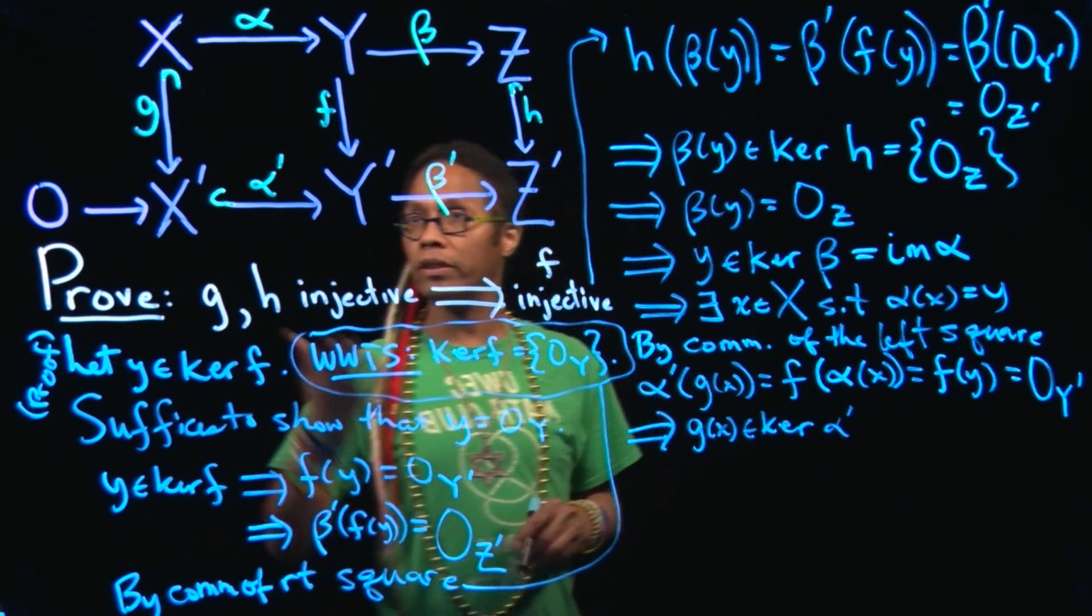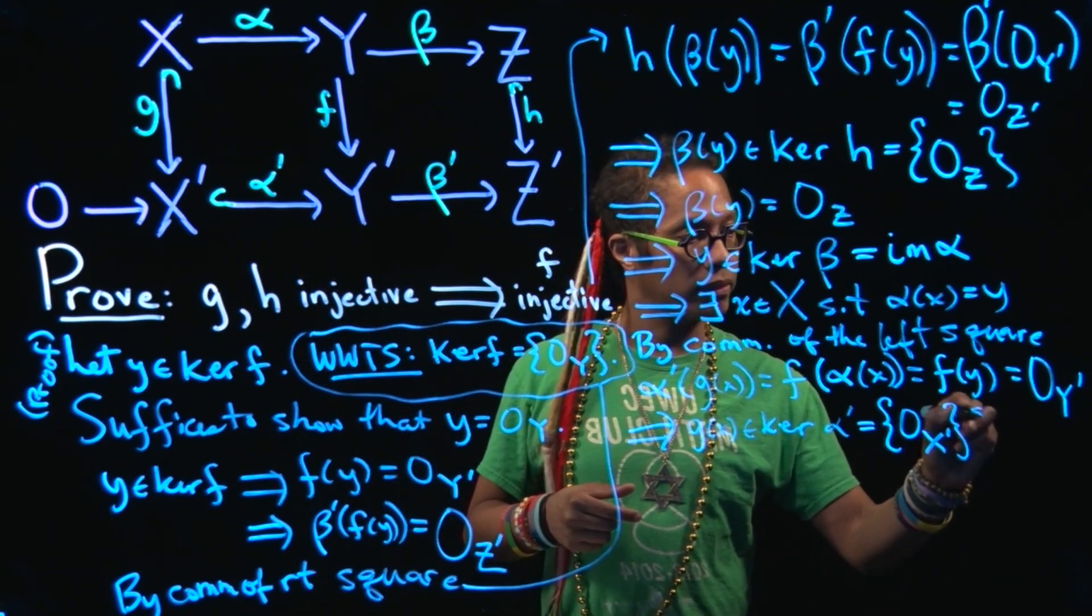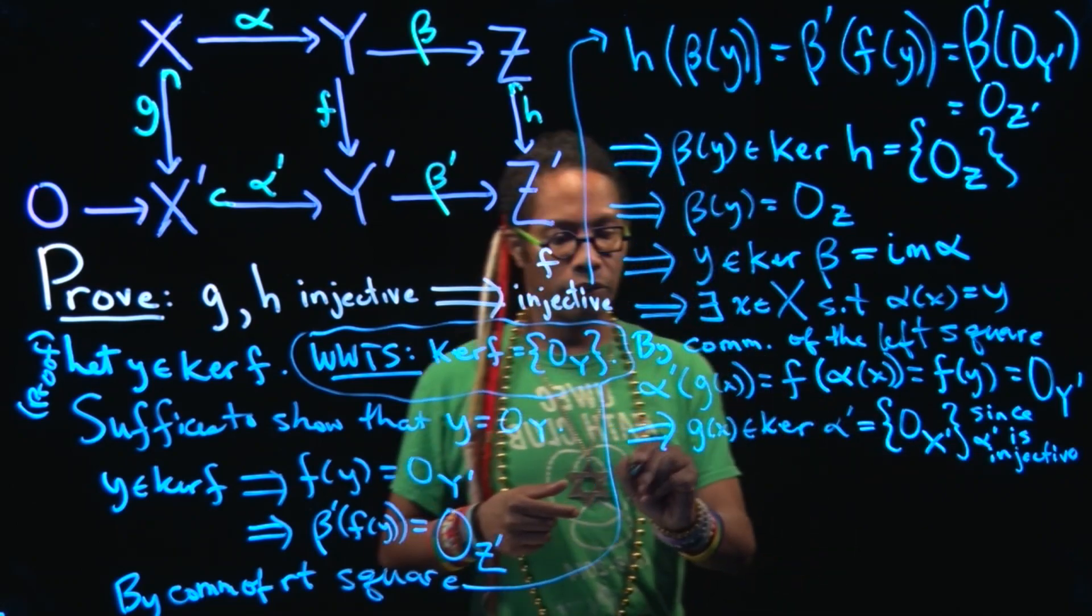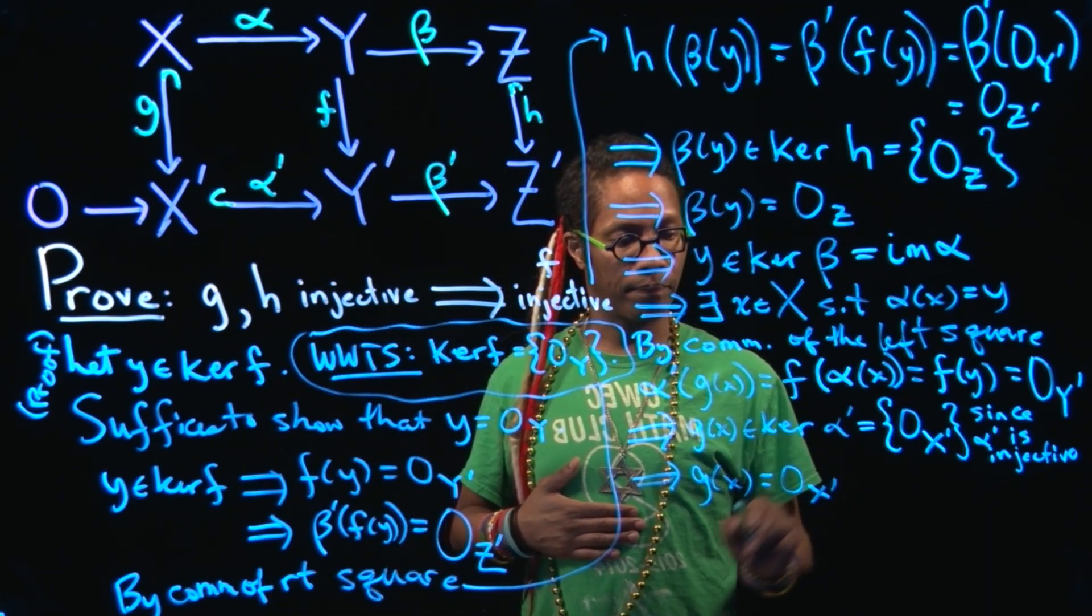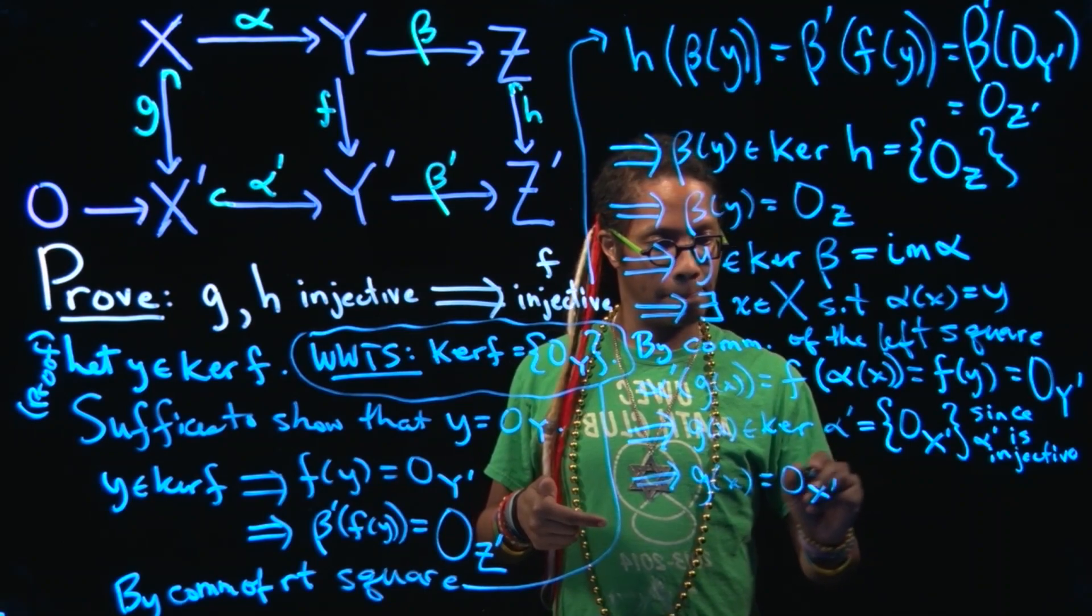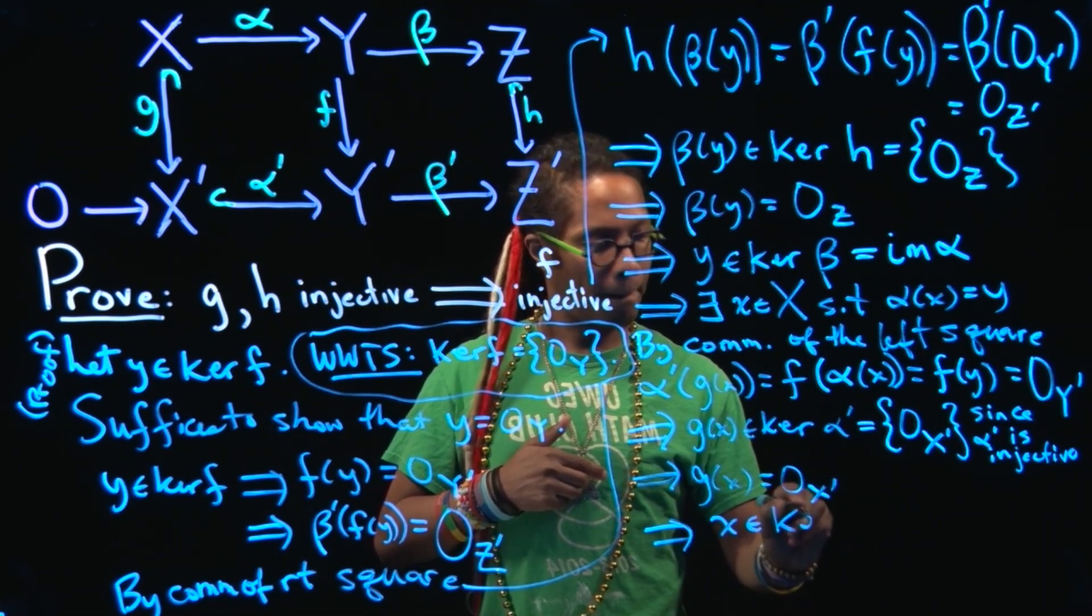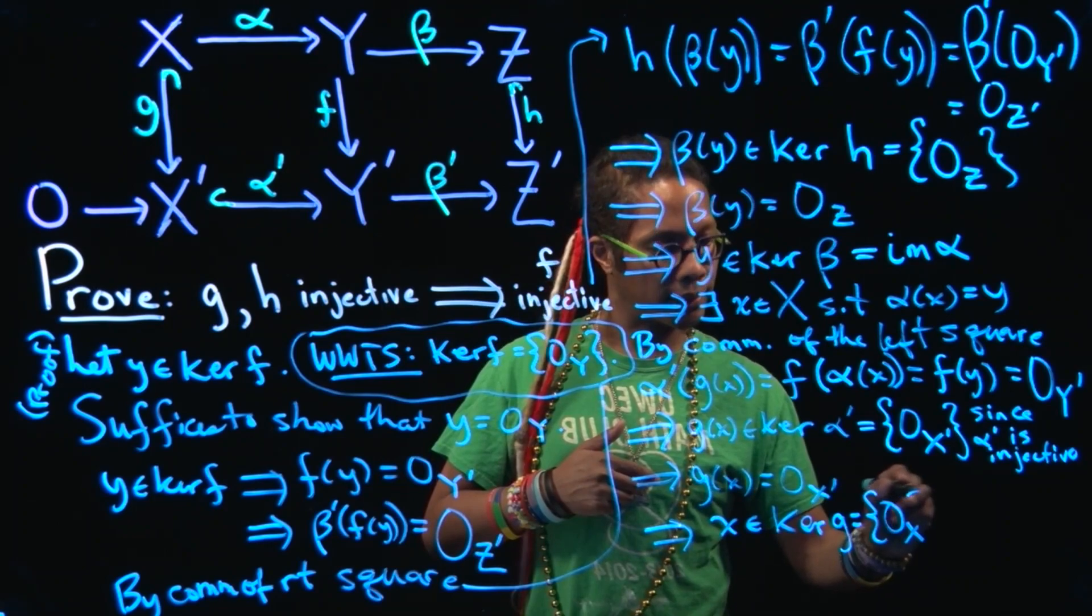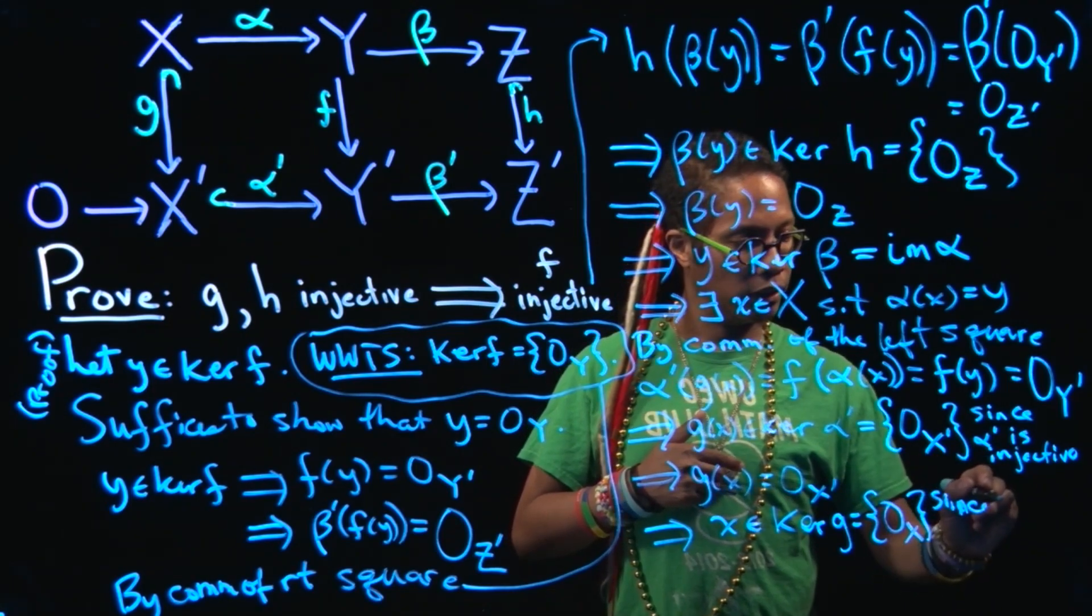Alpha prime is injective. So this thing is equal to just one element in the domain of alpha prime. And this is since alpha prime is injective. So that means then that G of X is in particular equal to 0 sub X prime. But G is also injective. So that means then G of X being 0 sub X prime means that X is in the kernel of G, which by the injectivity of G is just the zero in X, since G is injective.